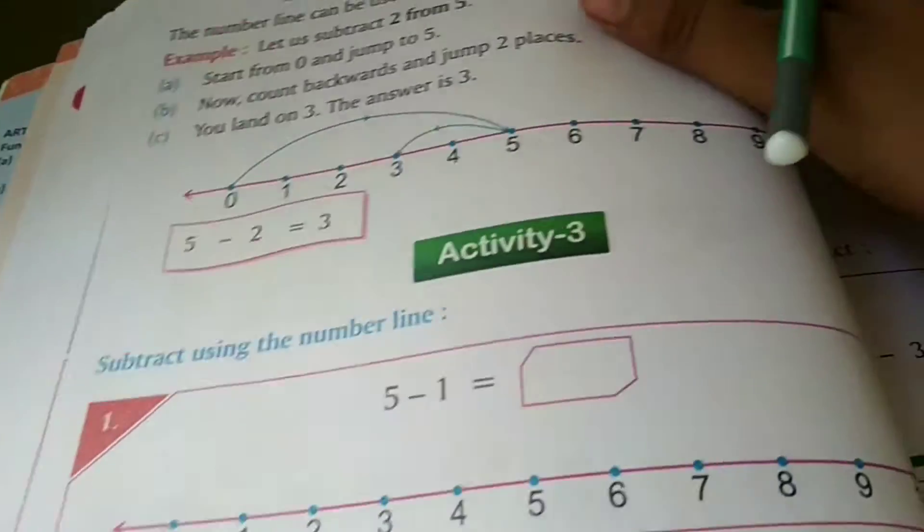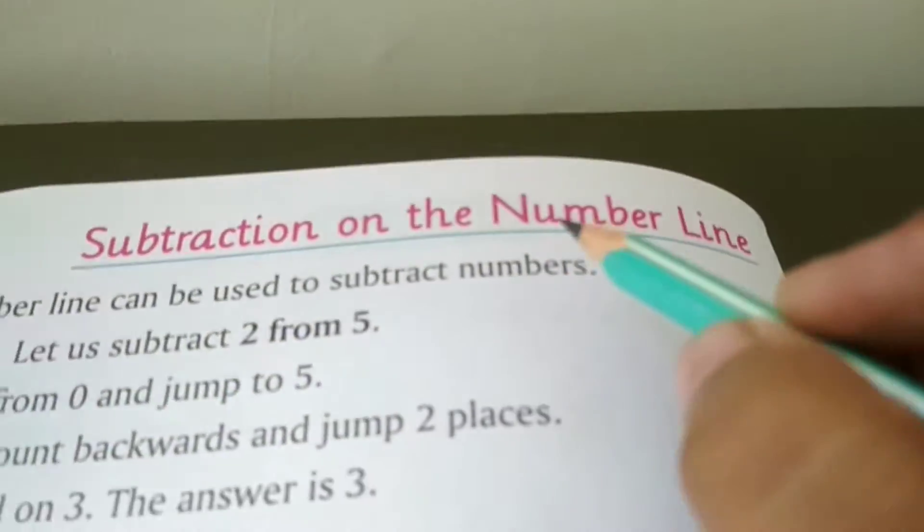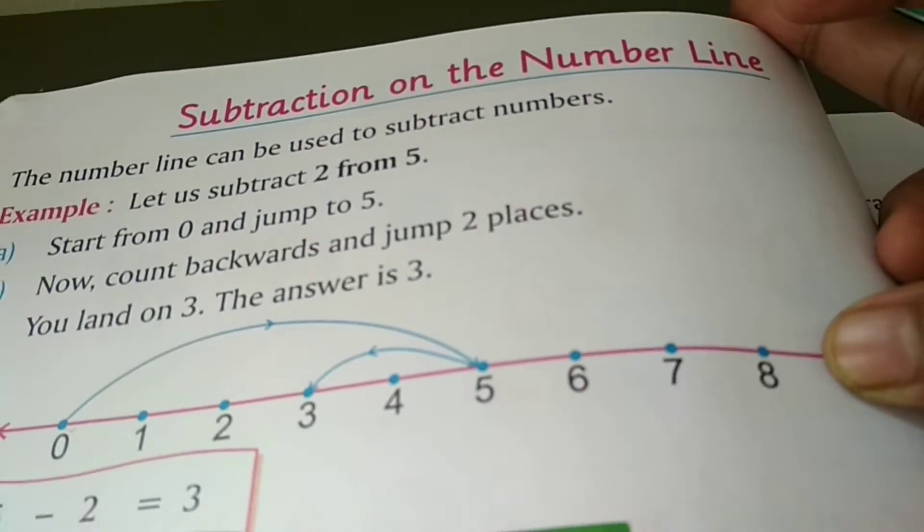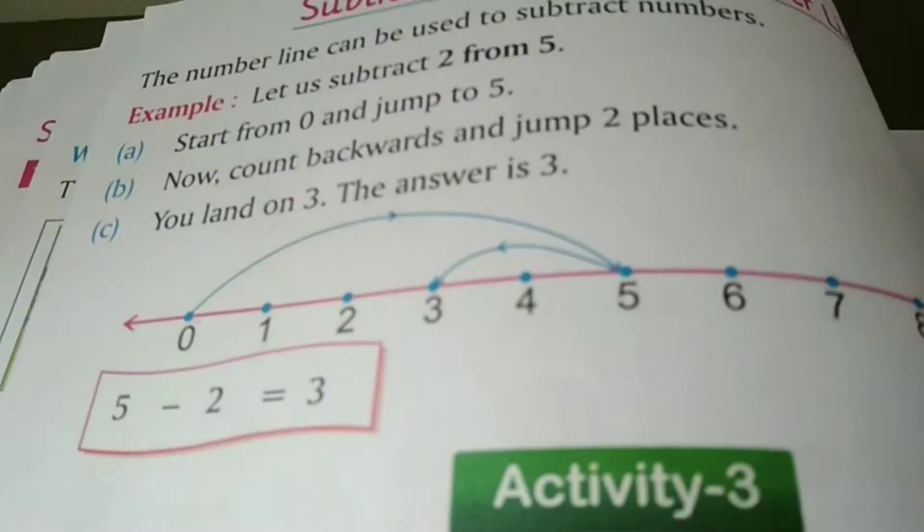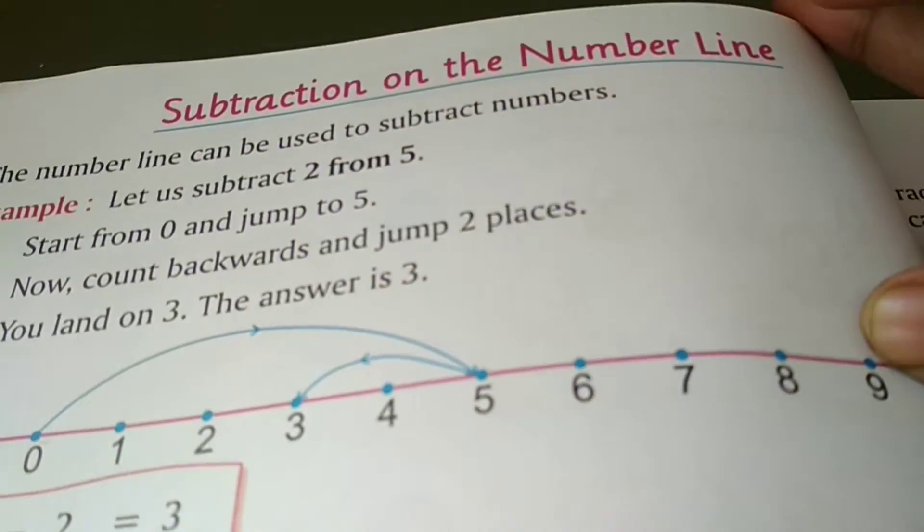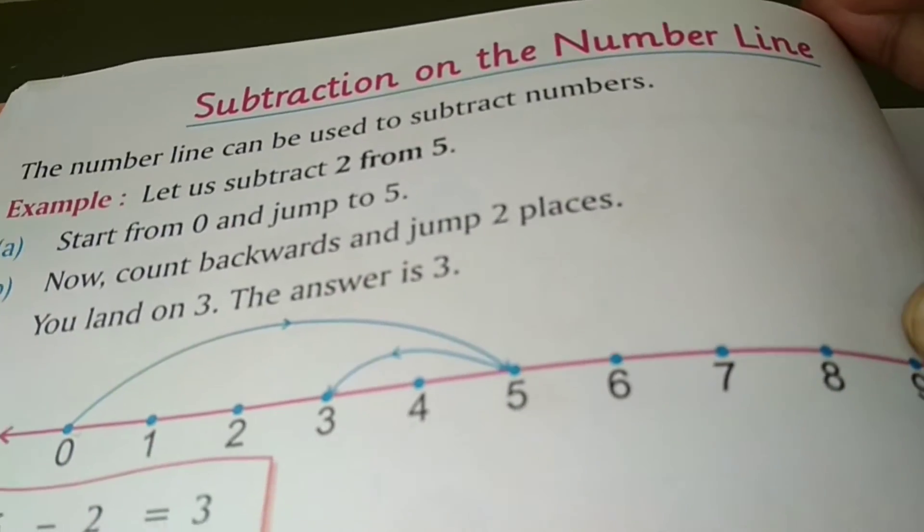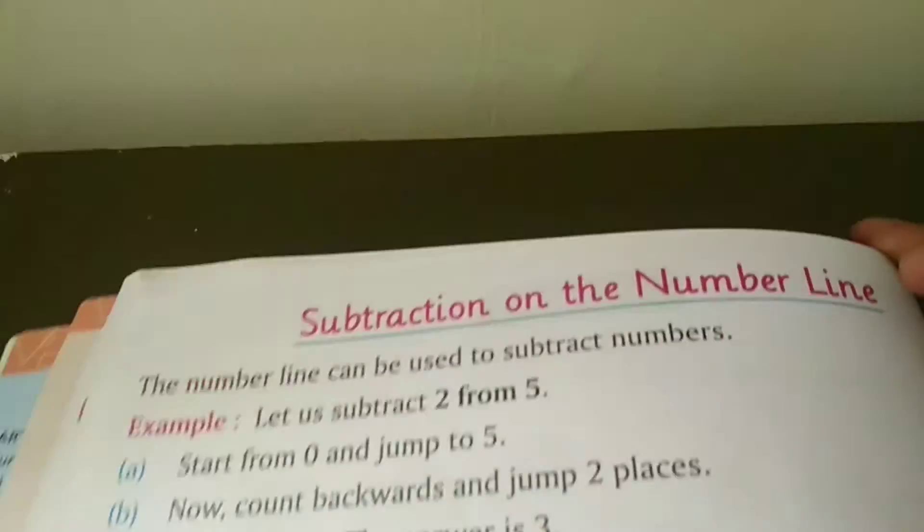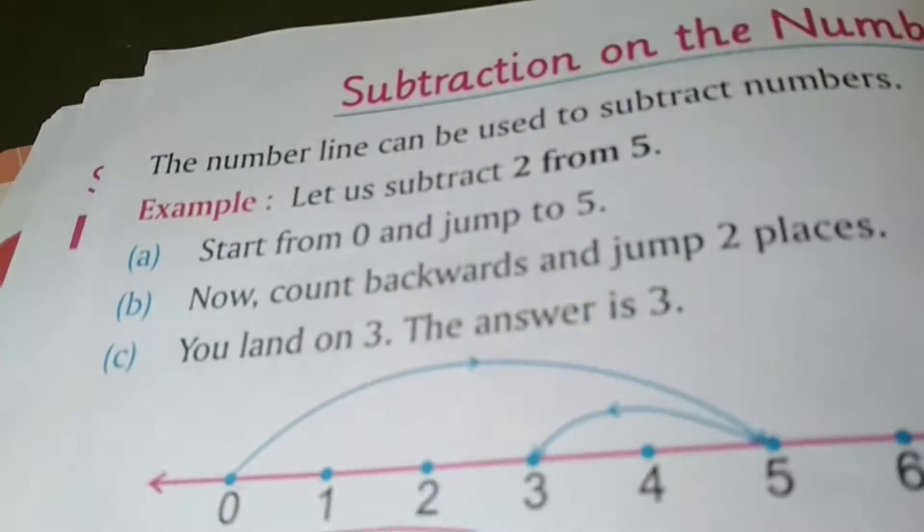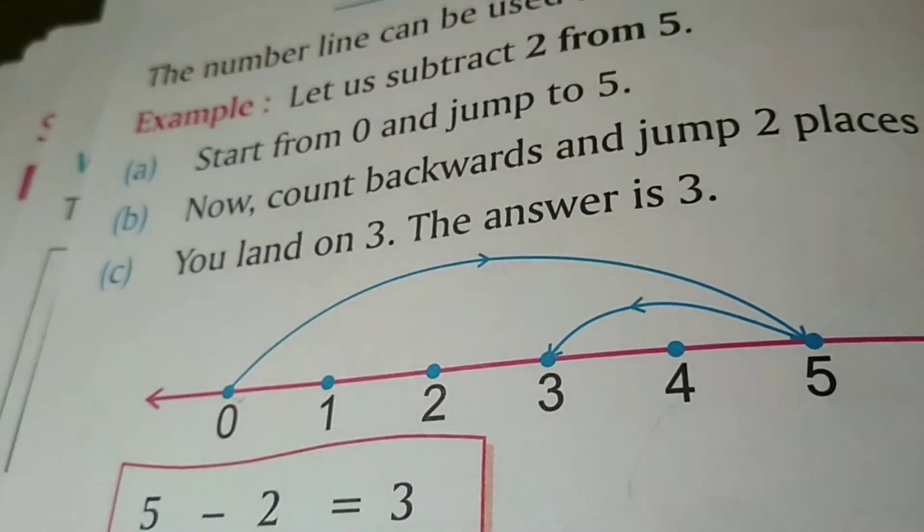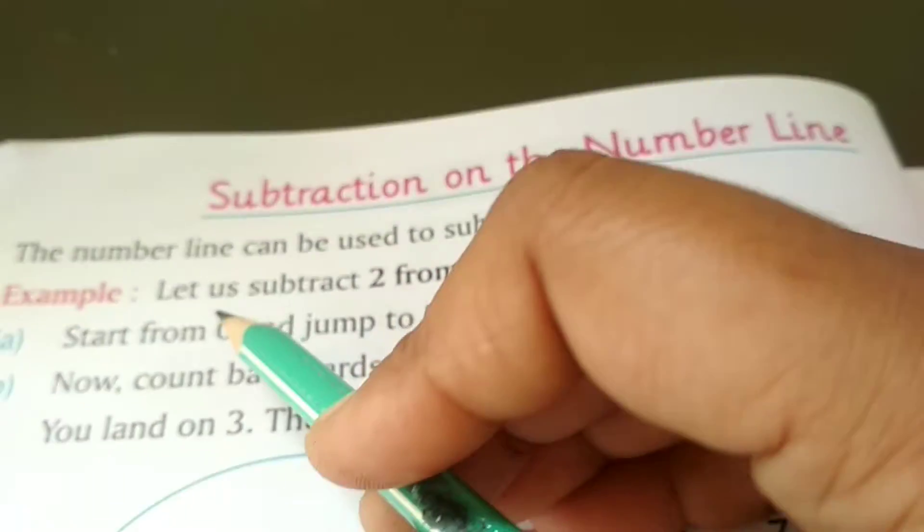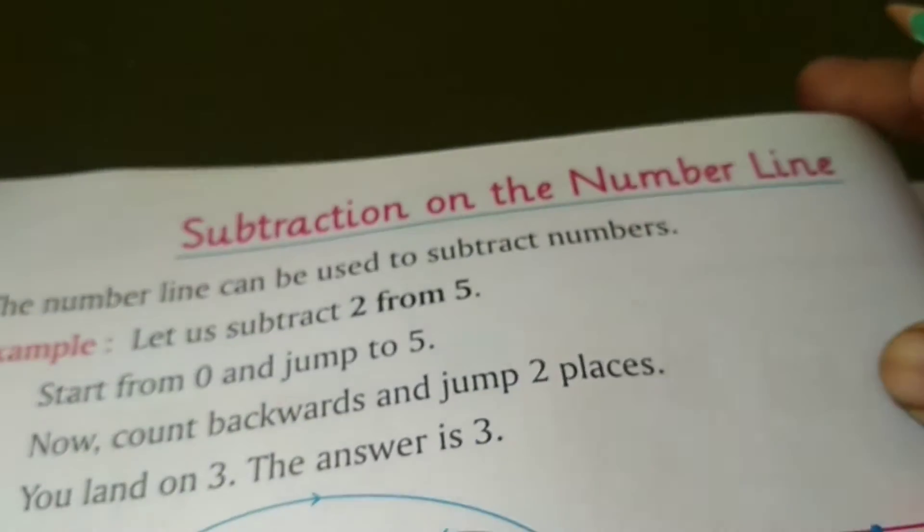I hope you understand. Now we will do activity number 3, that is subtraction on the number line. You have already done the addition number line, right? You have to add forward, that's why the number line will go towards forward. But this is a backward number line. You have to minus and point on that number. Let's read. The number line can be used to subtract numbers.